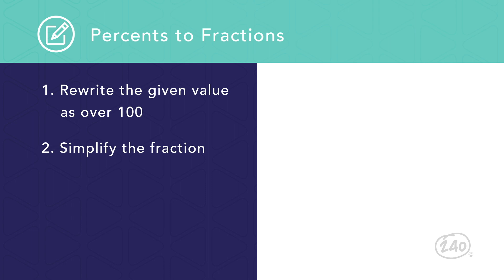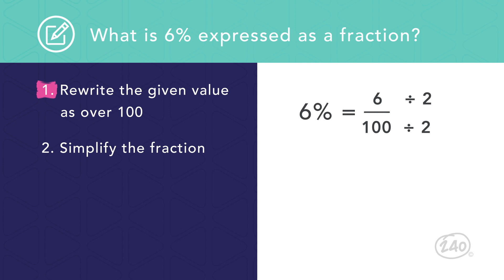Let's look at some example conversions. What is six percent expressed as a fraction? Start by rewriting the percentage as six over one hundred. Then divide both the numerator and denominator by two to simplify the fraction to three over fifty. Now we found that six percent is equal to three fiftieths.